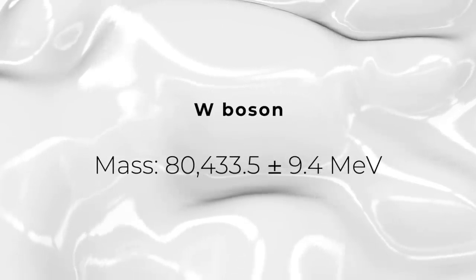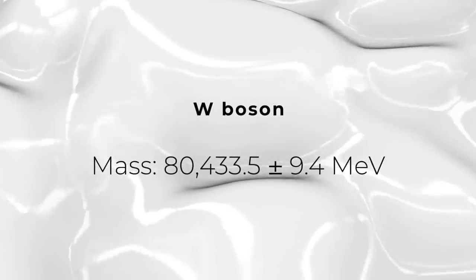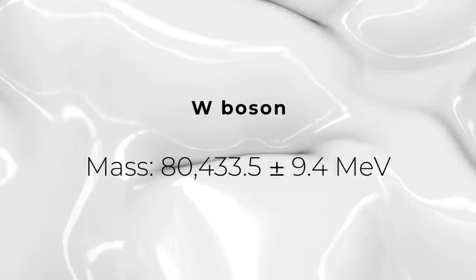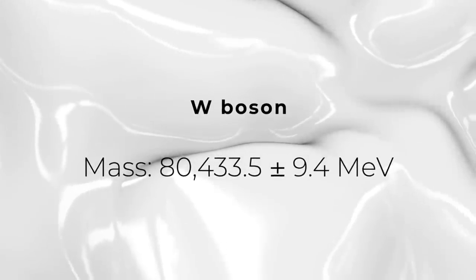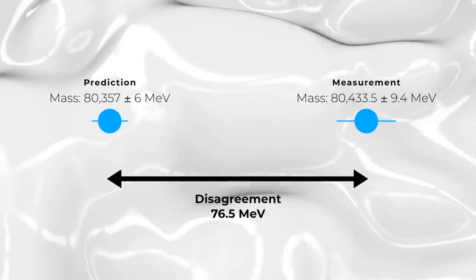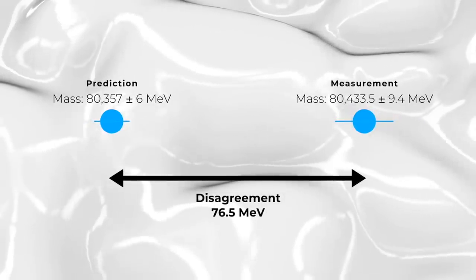They measured the mass of the W boson to be 80,433.5 ± 9.4 MeV. This uncertainty is half the size of the next best measurement, and that's amazing. But that's not the most exciting part.